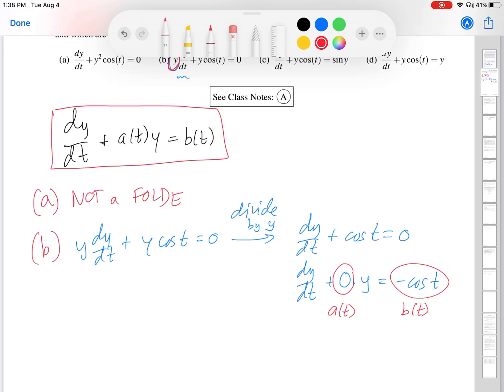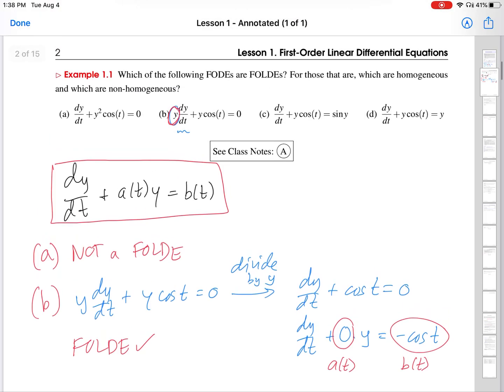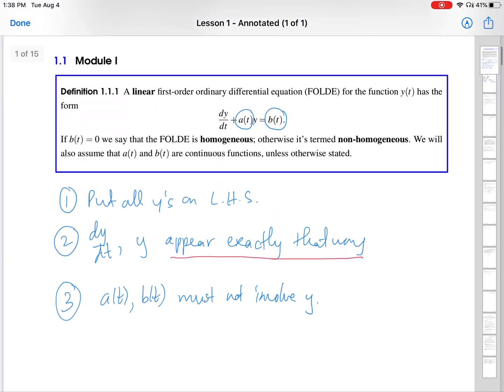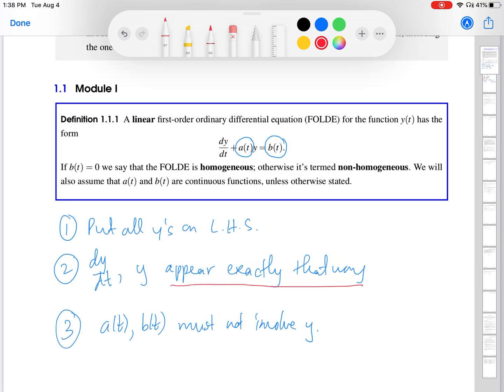In this form, I can then go back and compare to my standard ODE form and identify which of these things are the A of T function. There it is. And which of these are the B of T. There it is. Great. So, this ODE is linear. So, we are going to put over here, fold. Check. And then we wanted to find out if it's homogeneous or non-homogeneous.